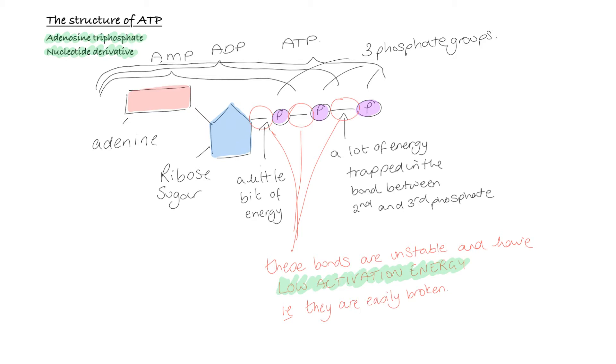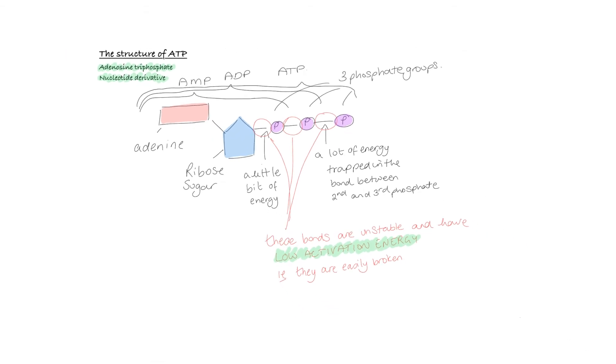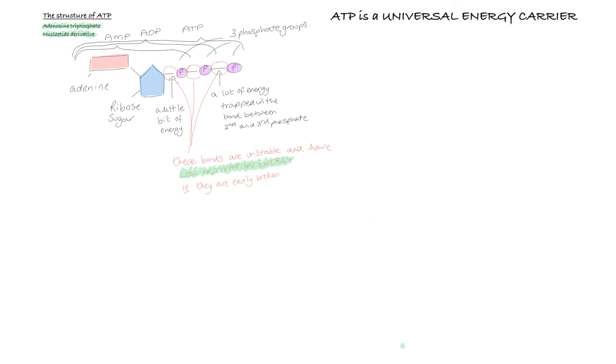ATP is a universal energy carrier. That means it is the form of chemical energy which is found in all living cells, all living organisms. This is really important, and it is one way, just in the same way that DNA is the universal hereditary material, that all living things are connected. It shows us that we are all evolved from the same common ancestor, LUCA, the last universal common ancestor. It shows us that we all share this basic trait.